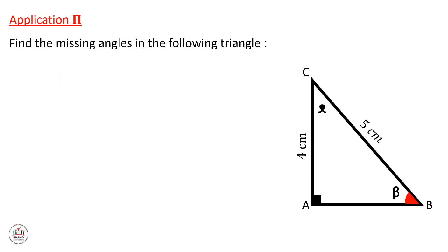Let's solve another application. But this time we will use these formulas to find the missing angles. We need to find angle beta and angle alpha. We have only two sides: AC with 4 cm and BC with 5 cm. Let's see how we can solve it.